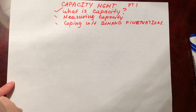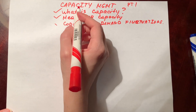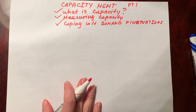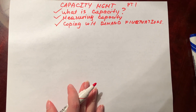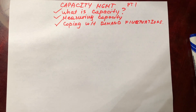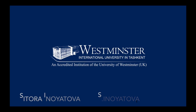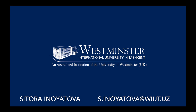In this session we did an introduction to capacity management. Now you know what capacity is, how to measure capacity using three measures and calculate utilization and efficiency, and how to cope with demand fluctuations using three strategies. Thank you for listening. Please give this video a thumbs up and do take care of yourself and your loved ones. This was Sitori Nayatova, module leader for the Operations Management module at Westminster International University in Tashkent.